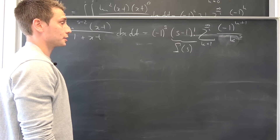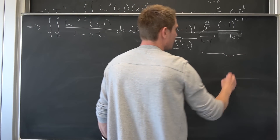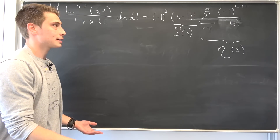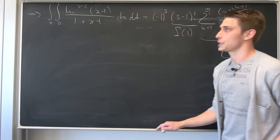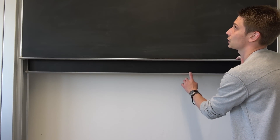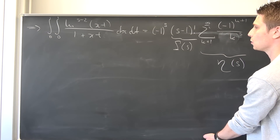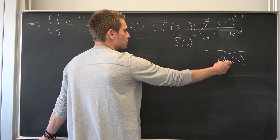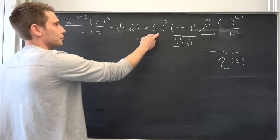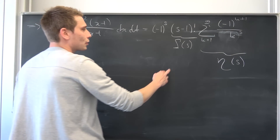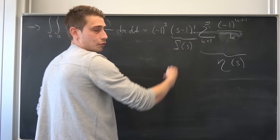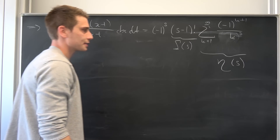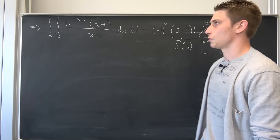And we are basically done. You see this thing right here is nothing but our Dirichlet eta function, and we denote it as eta of s. This right here is our finished integral representation. You can solve for eta of s: divide by negative 1 to the s power — which is never zero — and divide by gamma of s — which is nonzero for positive integers — and then you have your integral representation for the Dirichlet eta function.